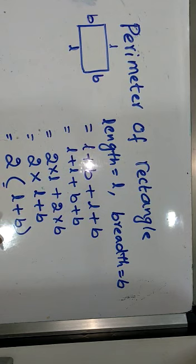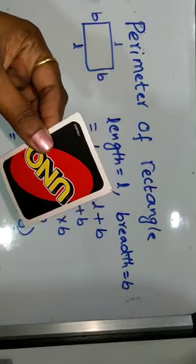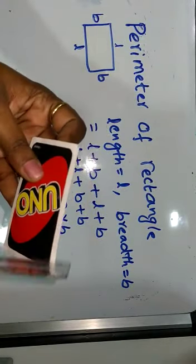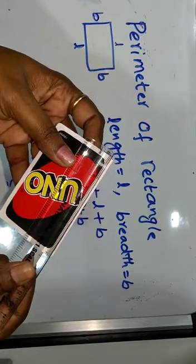Let's see an example. Let us find the perimeter of this UNO card. We all know how to measure, right? The longer side is length. Let's measure the length. It is 9 centimeters.